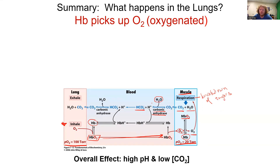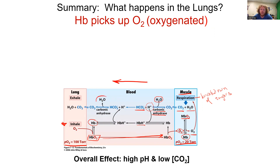The proton produced by the carbonic anhydrase reaction is added to hemoglobin, making protonated hemoglobin. As we move closer to the lungs, that protonated hemoglobin releases a proton. The HCO3- in the bloodstream pairs with that proton, and carbonic anhydrase releases H2O and CO2, which is delivered to the lungs to be exhaled.